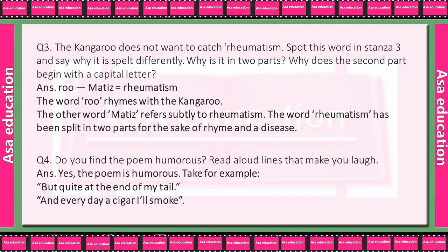The Kangaroo does not want to catch rheumatism. Spot this word in stanza 3 and say why it is spelled differently. Kangaroo jo hai, wo rheumatism ko catch nahi karna chahta tha. Ye jo word hai stanza 3 mein, aap isko dhundhiye, aur phir batayiye ki isko bilkul alag tariqe se kyun spell kiya gaya hai. Why is it in two parts? Do bhaagon mein kyun bataya hai? Why does the second part begin with a capital letter? Aur second part jo hai, wo capital letter se kyun shuru hota hai?